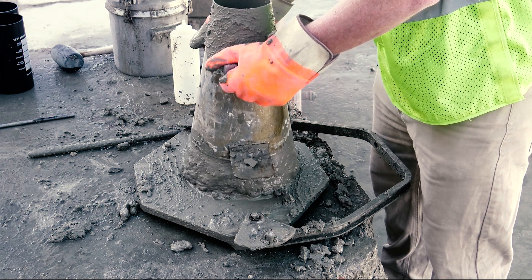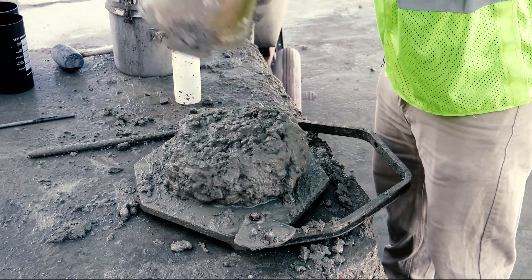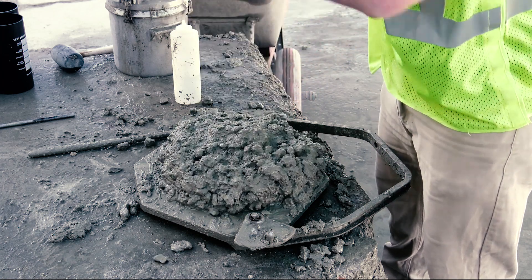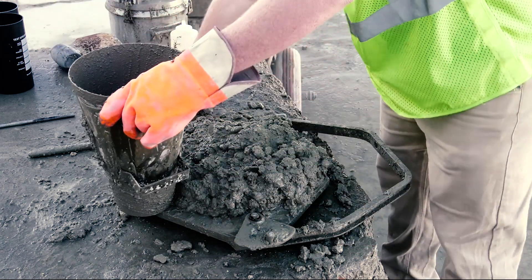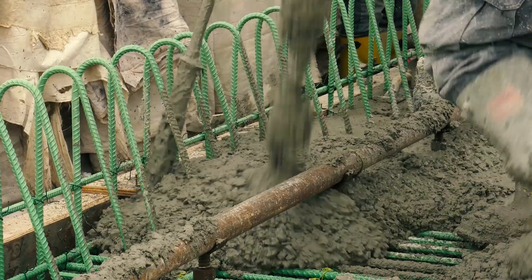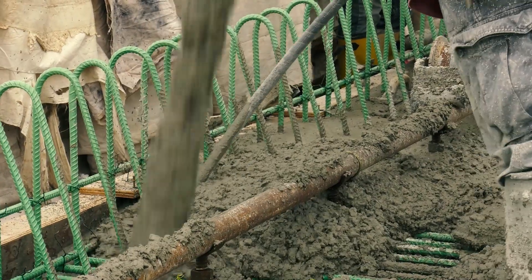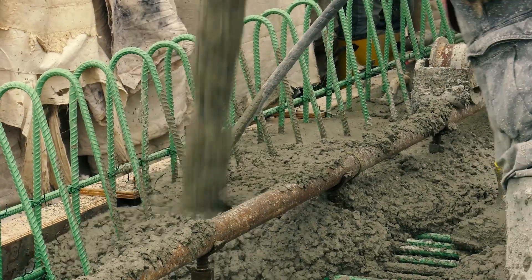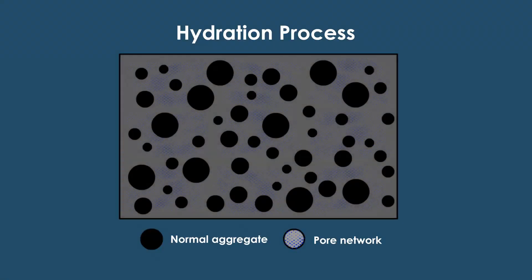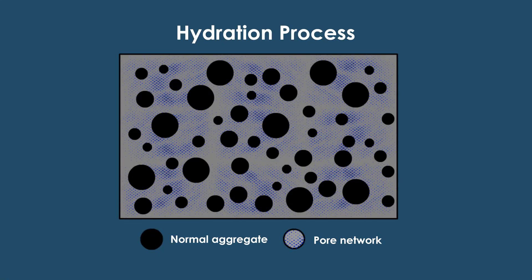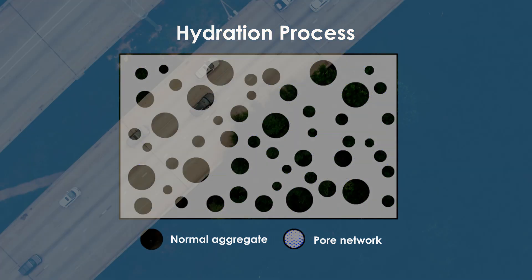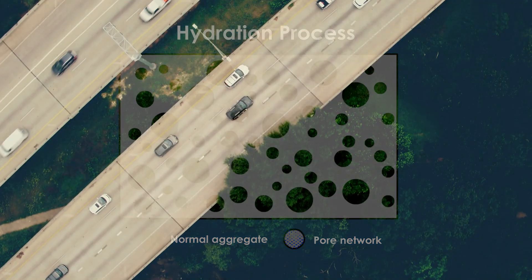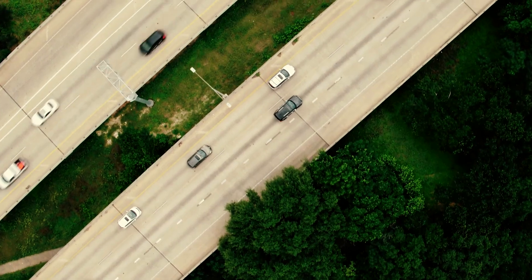Concrete is made of paste and aggregates, or rocks. The paste that binds aggregates is made of cement and water. When first placed, the mixture is plastic, but soon a chemical process known as hydration begins, causing the paste to harden and transforming the mixture into a hard, durable, rock-like material known as concrete.